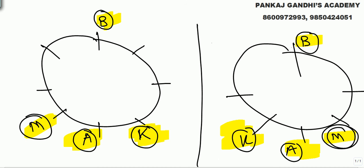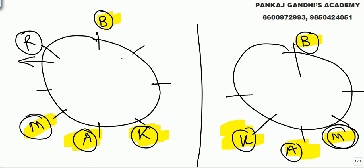Ajay is second to the left of Pappu — Pappu kahi bhi ho sakta hai, so abhi yeh clue hold karte hai. Aur kuch dhundte hai. Mahi is second to the left of Rani — important clue. Is case mein Rani yahan pe hi aayega. Agar Rani center ke taraf dekhe, toh Mahi uske second to the right ho jayega — mujhe chahiye to the left. Toh Rani aise dekhegi, aur Mahi check karo — Mahi second to the left of Rani confirmed.